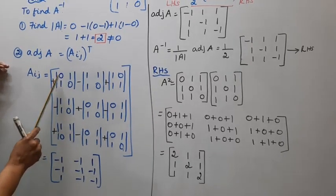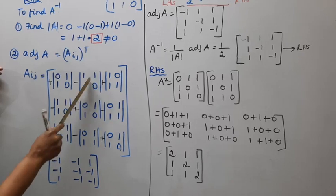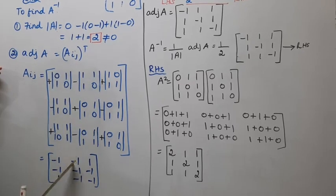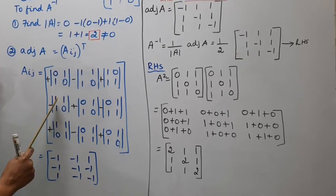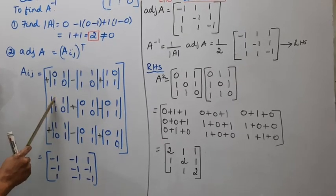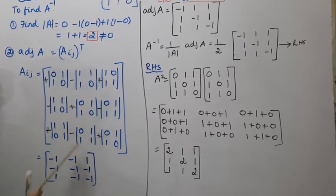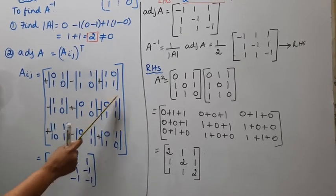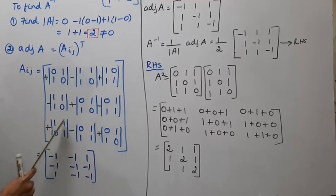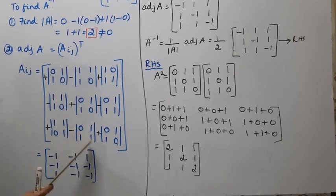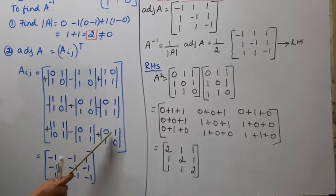Computing each cofactor element: C11 = 0, minus 1, minus 1. C12 = 0, minus 1, minus 1. C13 = 1, minus 0 = 1. Then C21 = 0, minus 1, minus 1. C22 = 0, minus 1, minus 1. C23 = 0, minus 1, minus 1. C31 = 1, minus 0 = 1. Writing all cofactors into the cofactor matrix.